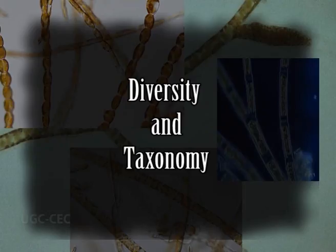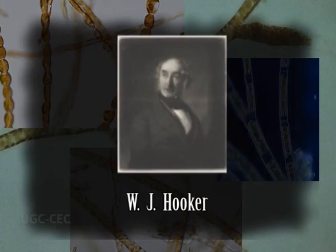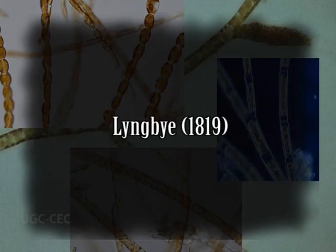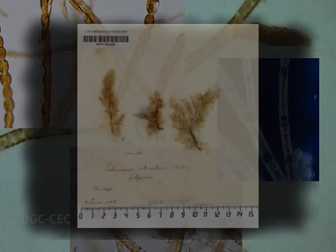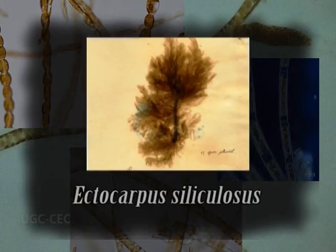Let us analyze its diversity and taxonomy. Lyngbye in 1809, based on materials of Ectocarpus collected by W.J. Hooker, published the first valid description of Ectocarpus using the name Conferva siliculosa. Lyngbye in 1819 described the genus Ectocarpus based on material from Denmark and cited Conferva siliculosa as basionym. Ectocarpus siliculosa is the type species of the order Ectocarpales, which includes most of the small brown algae. There are 410 species and infraspecific names in the algal database at present, of which 100 have been flagged as currently accepted.